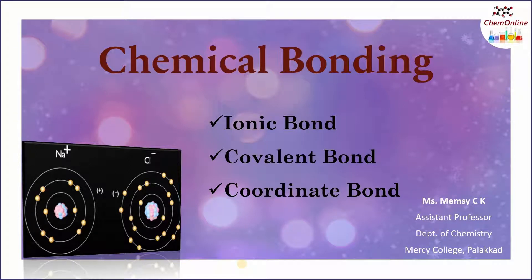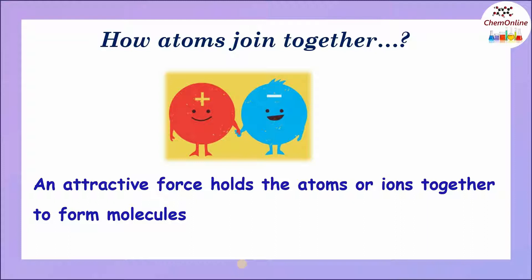Dear students, in this video we will discuss about chemical bonding and what are the different types of chemical bonds. If you want to join two pieces of paper, you can do so by applying some glue between the papers. Similarly, if you want to join two pieces of cloth, you can just stitch it together. But have you ever thought how do atoms join together?